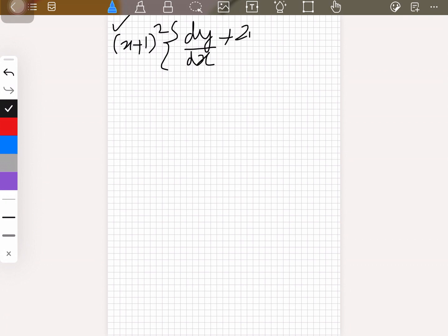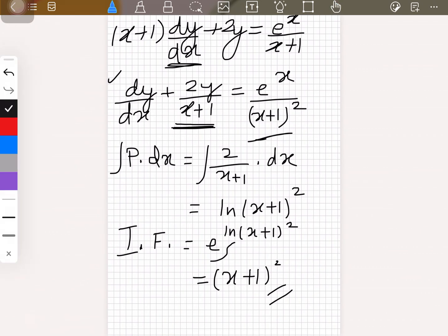... 2y/(x+1)] = e^x. Now you should know by now that this (x+1)^2 cancels the (x+1)^2 on the right-hand side, so we get e^x.